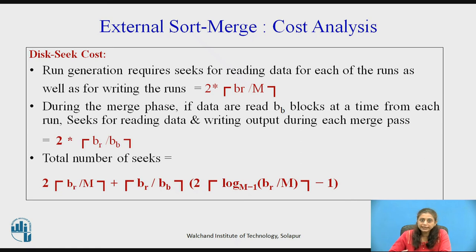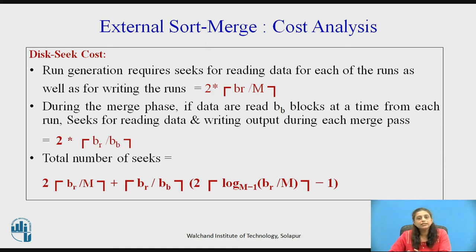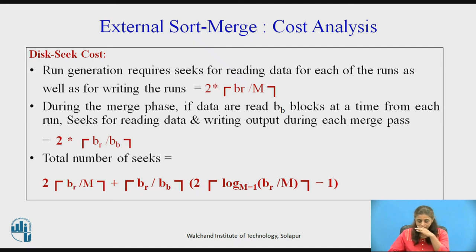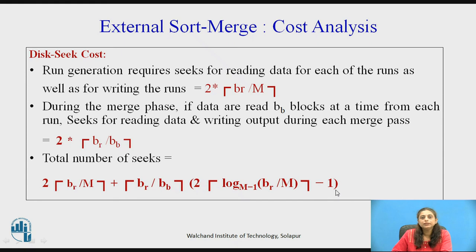For the seek cost: in the first phase, we require 2 × ⌈B_R / M⌉ seek operations, since we take M blocks at a time into main memory. In the merge phase, if we read B_b blocks at a time, then there are ⌈B_R / B_b⌉ seeks for reads and writes. The total seek operations equal 2 × ⌈B_R / M⌉ plus 2 × ⌈B_R / B_b⌉ × number of passes. Note that ceiling operations are used to take the next integer value.